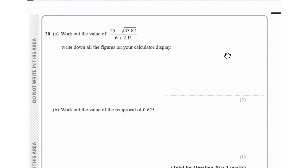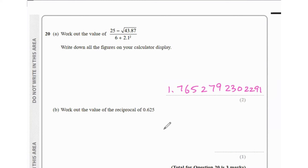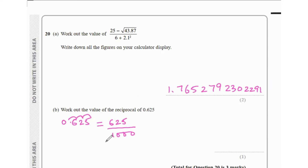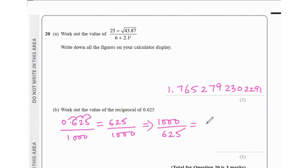Question 20 says work out the value of (25 − √43.87) / (6 + 2.1²) and write all figures on the calculator display. Plugging this into a calculator gives 1.765279230291. Part b says work out the reciprocal of 0.625. We can write 0.625 as 625/1000, so the reciprocal is 1000/625, which equals 1.6.